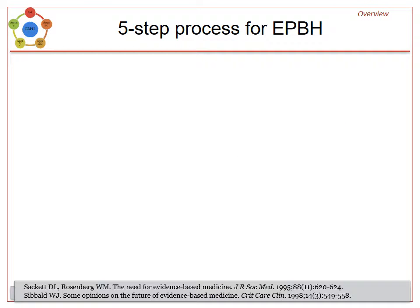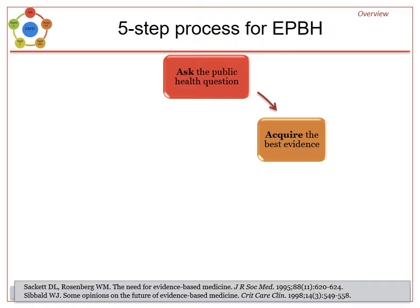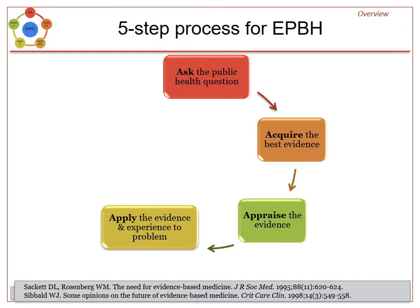Now let's consider the five steps of EBPH. First is asking the public health question. Next, you acquire the evidence and then appraise it to make sure that it's valid and reliable. Next, you need to apply that evidence to the situation. Finally, assess the impact of applying that evidence — and that may lead to more questions.